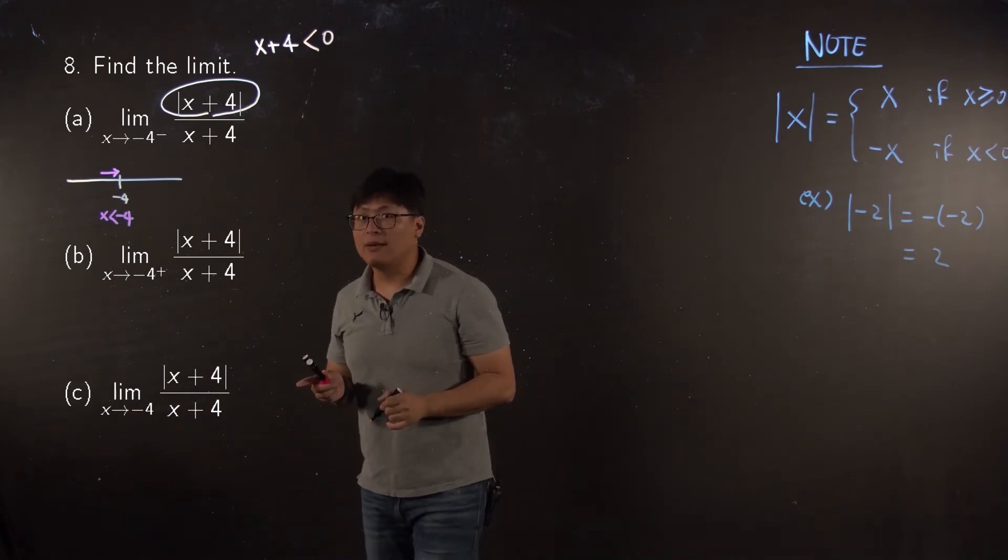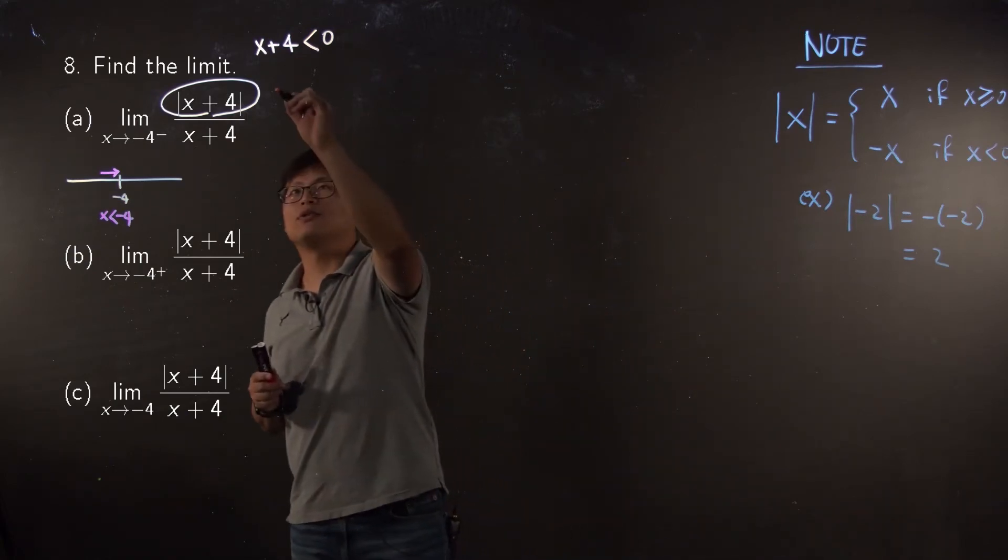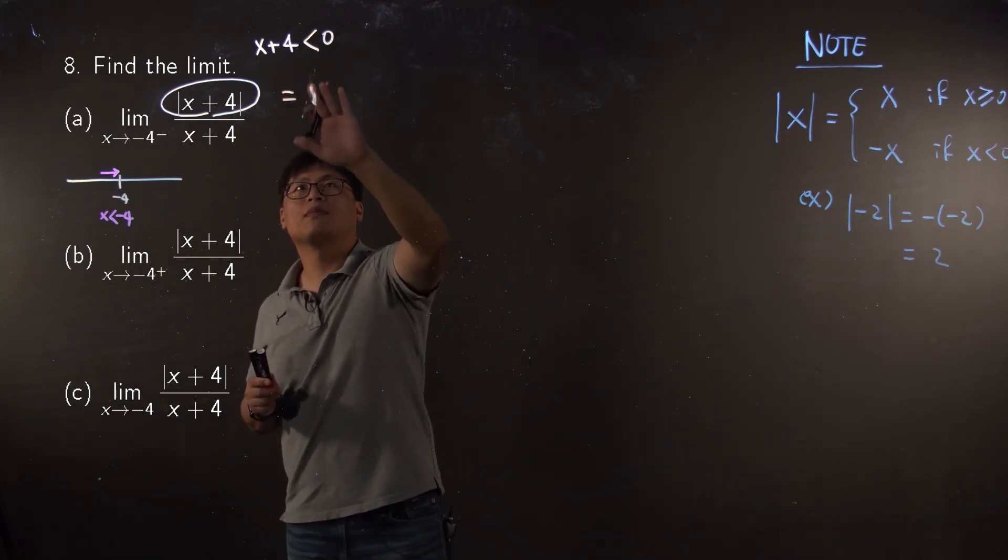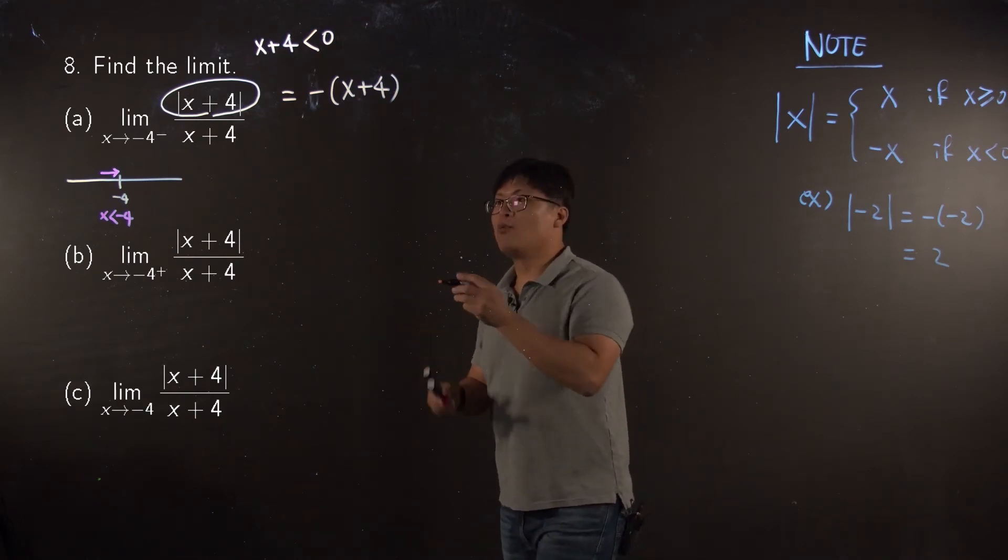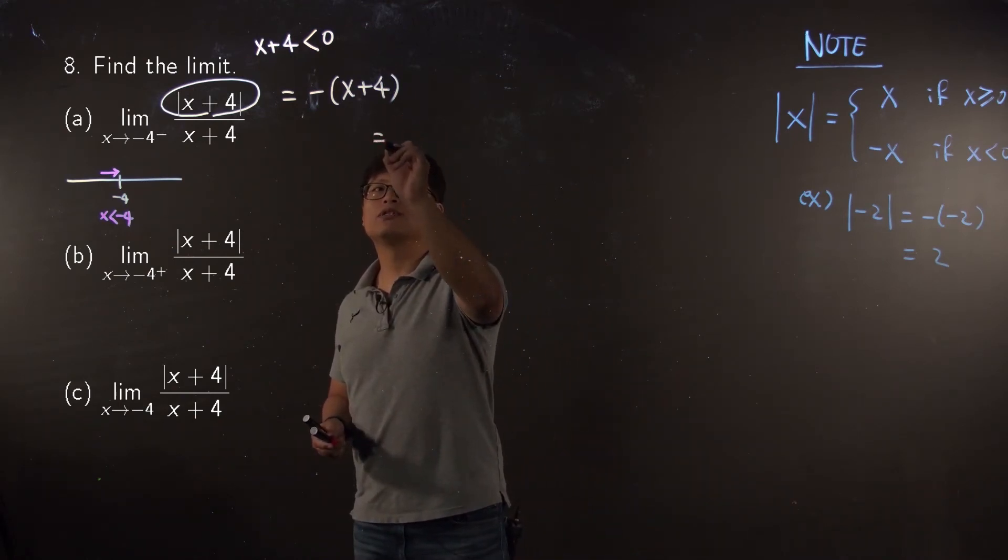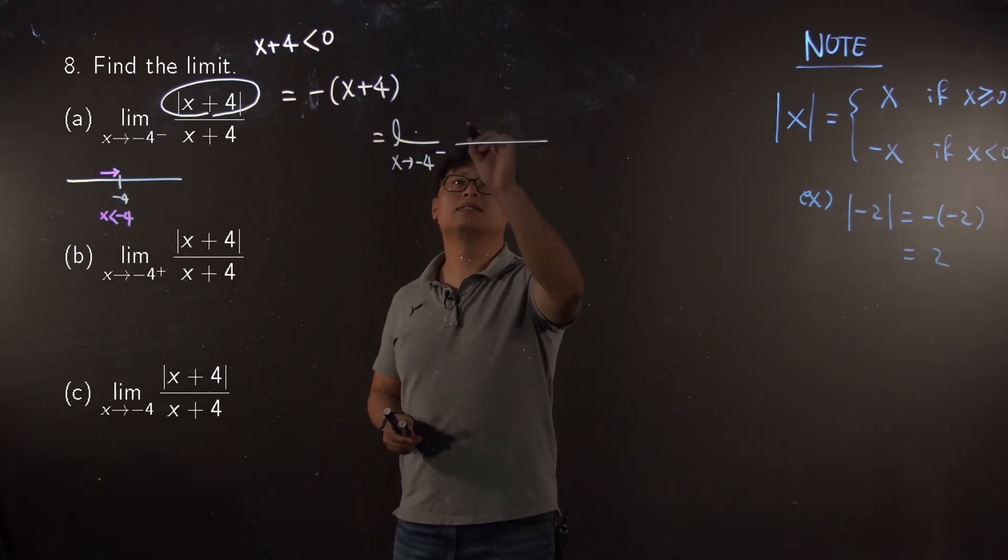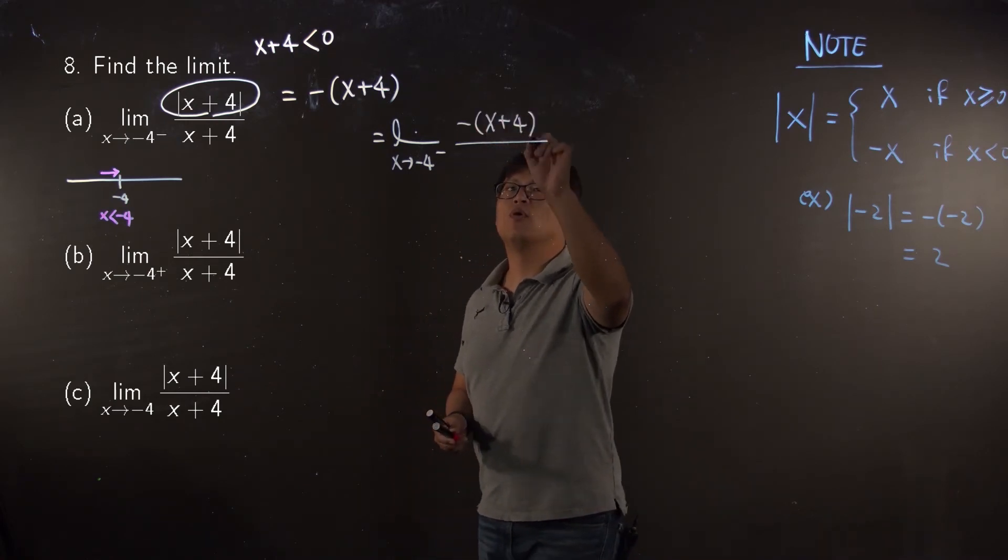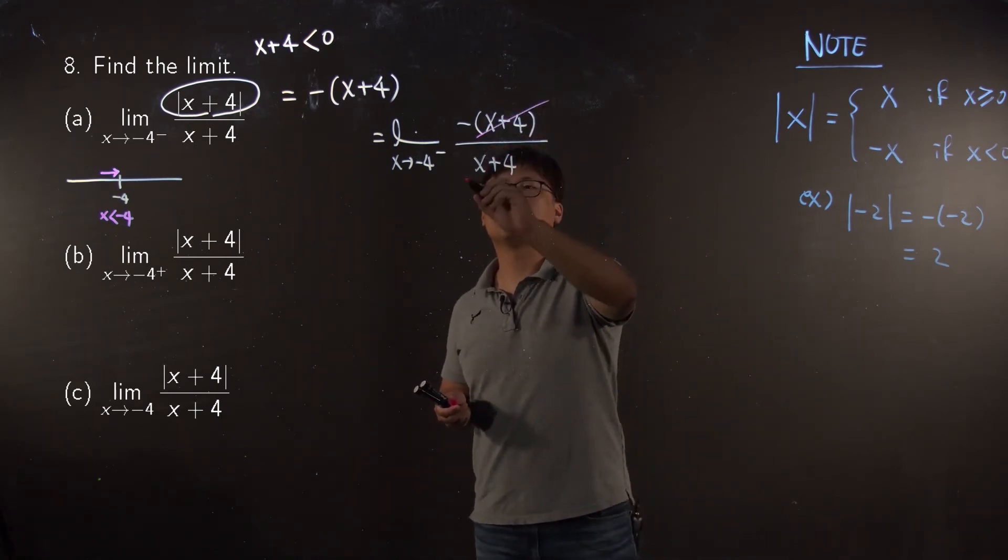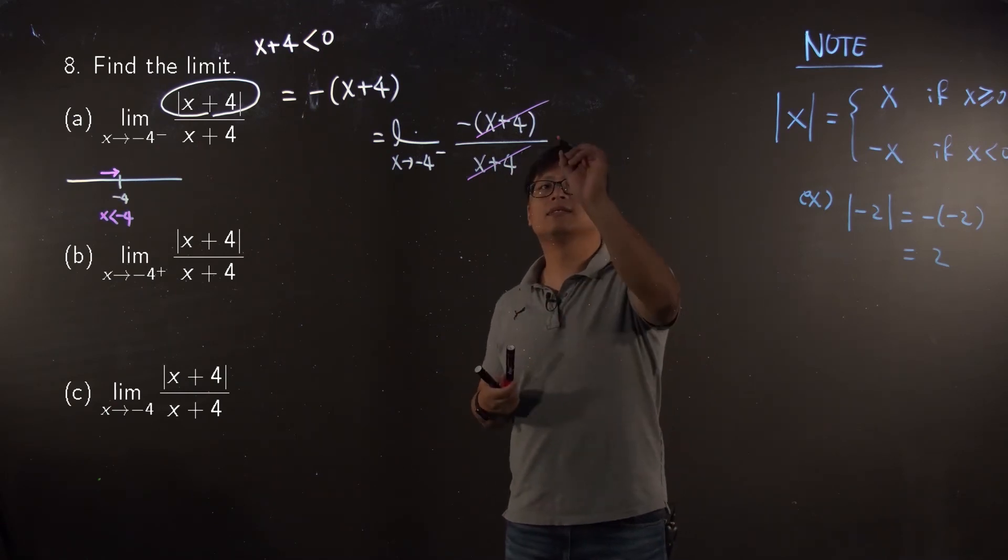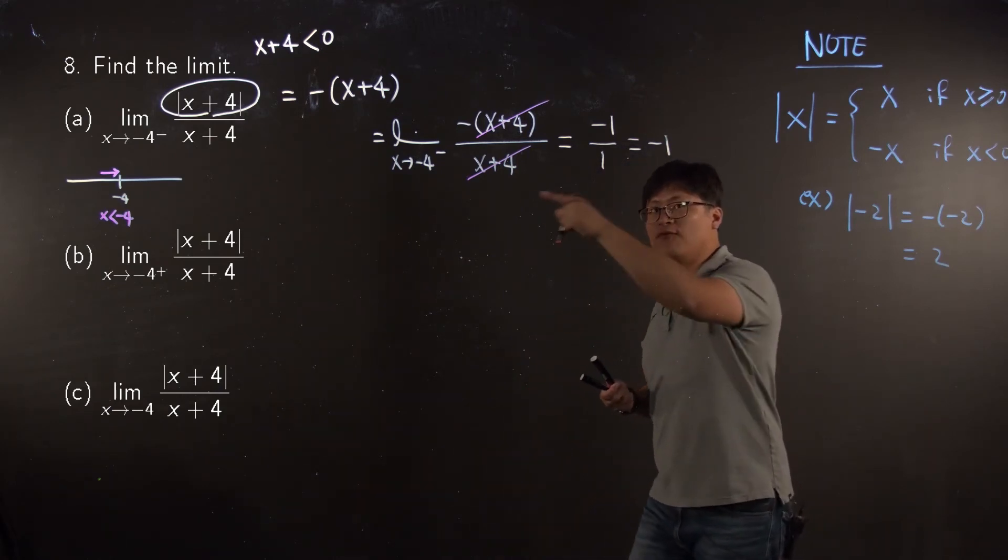The inside of absolute value is negative. Then, you must have negative x when you take off your absolute value. So, this guy is equal to negative of x plus four. Now, we can rewrite your limit problem. It is equal to limit x goes to negative four minus. Then, it is negative of x plus four over x plus four. Now, since we do not have any absolute value notation, then we can cancel out. So, your answer is negative one over one, which is negative one. So, we are going to apply this idea for the next problem.